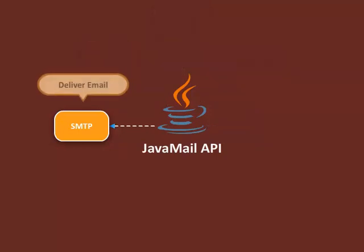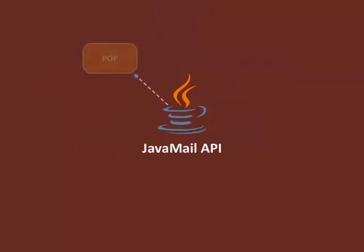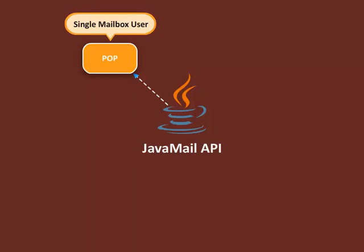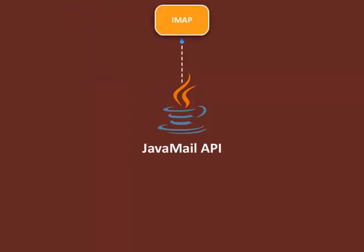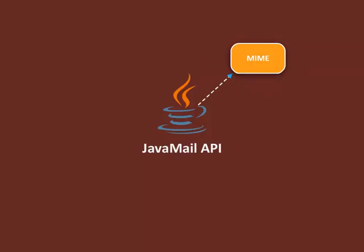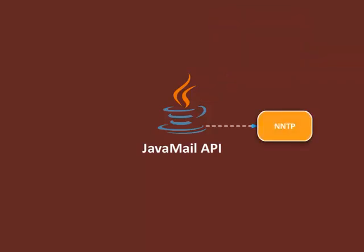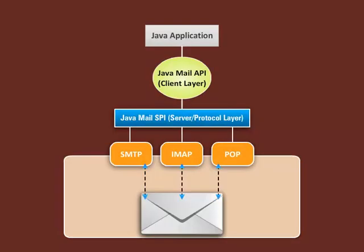SMTP provides a mechanism to deliver e-mail. POP or Post Office Protocol defines support for a single mailbox for each user. IMAP or Internet Message Access Protocol provides support for multiple mailboxes for each user. MIME or Multipurpose Internet Mail Extensions defines the content of what is being transferred. NNTP or Network News Transfer Protocol supports transfer of Usenet news articles between news servers.